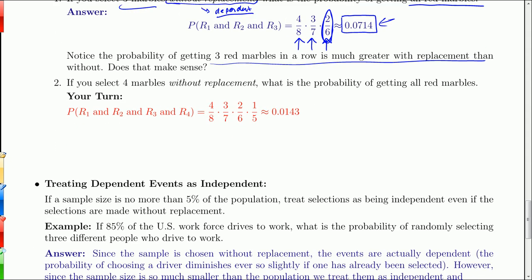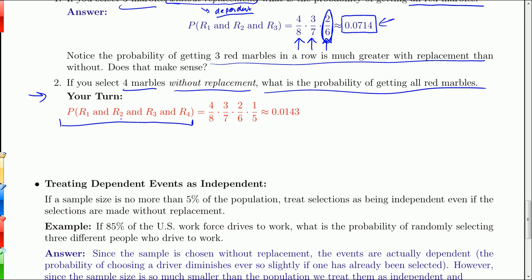Your turn: select four marbles without replacement. What is the probability of getting all red? You need red on the first, second, third, and fourth. Continuing the pattern: four out of eight times three out of seven times two out of six times one out of five, giving a probability of 0.0143. With eight marbles — four red, four green — it's pretty unlikely you'll draw four reds in a row without replacement.